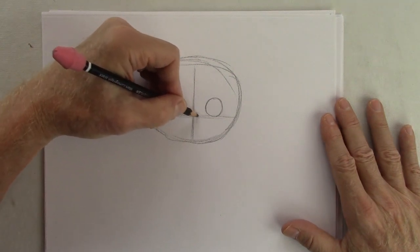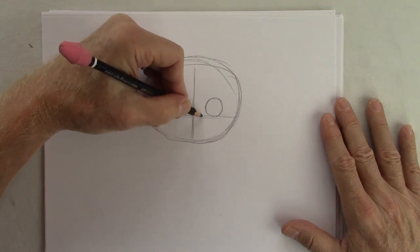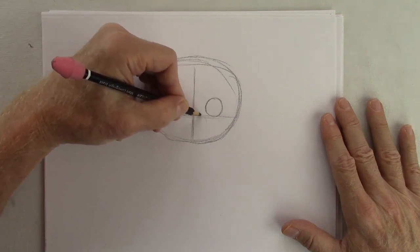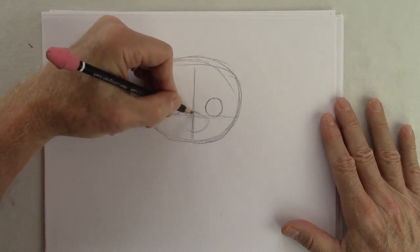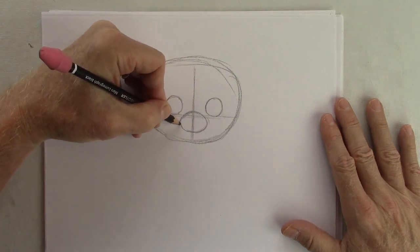A little above, this is the bridge of the nose, comes out like that, has its own little oval right there.